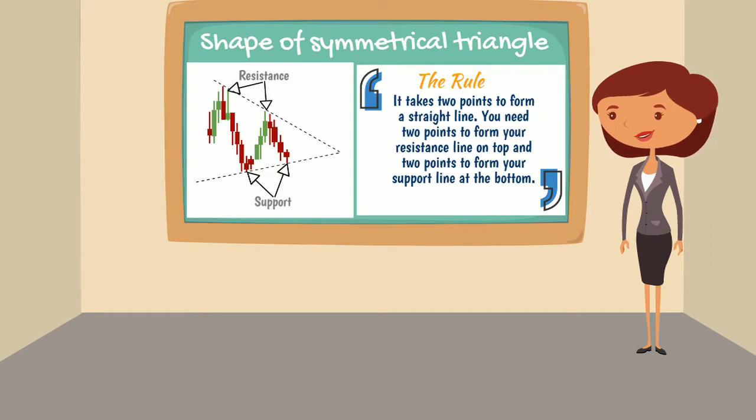The general shape of a triangle comes from support and resistance pushing twice into a corner. Notice how the highs get lower and the lows get higher. Support and resistance levels are compressing price action.